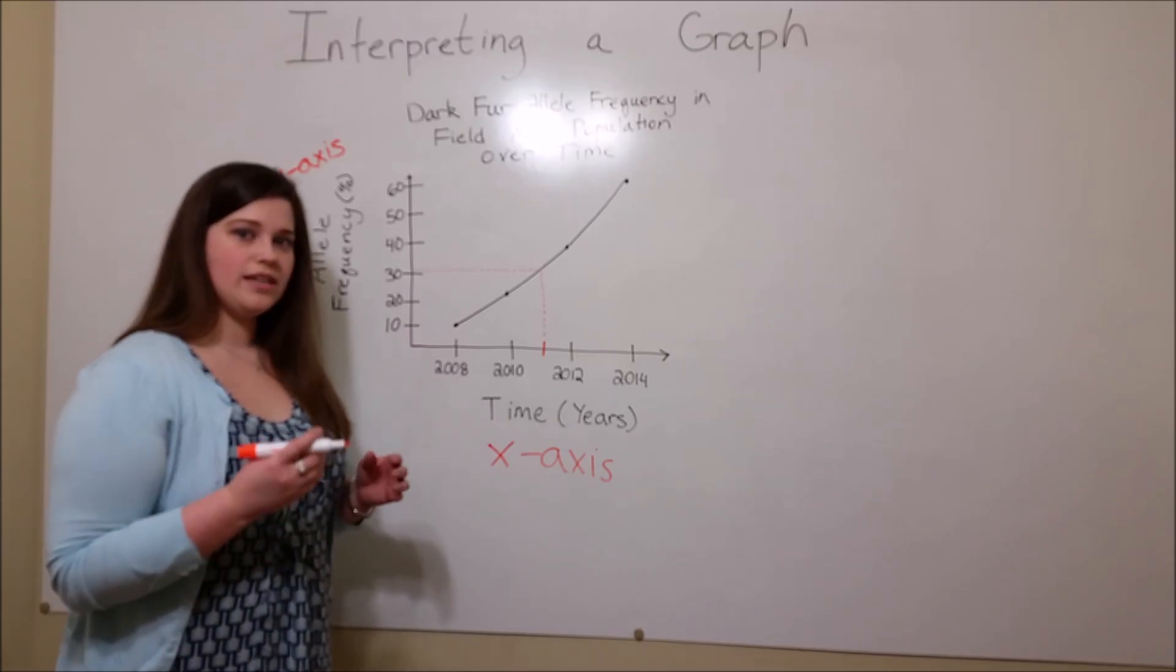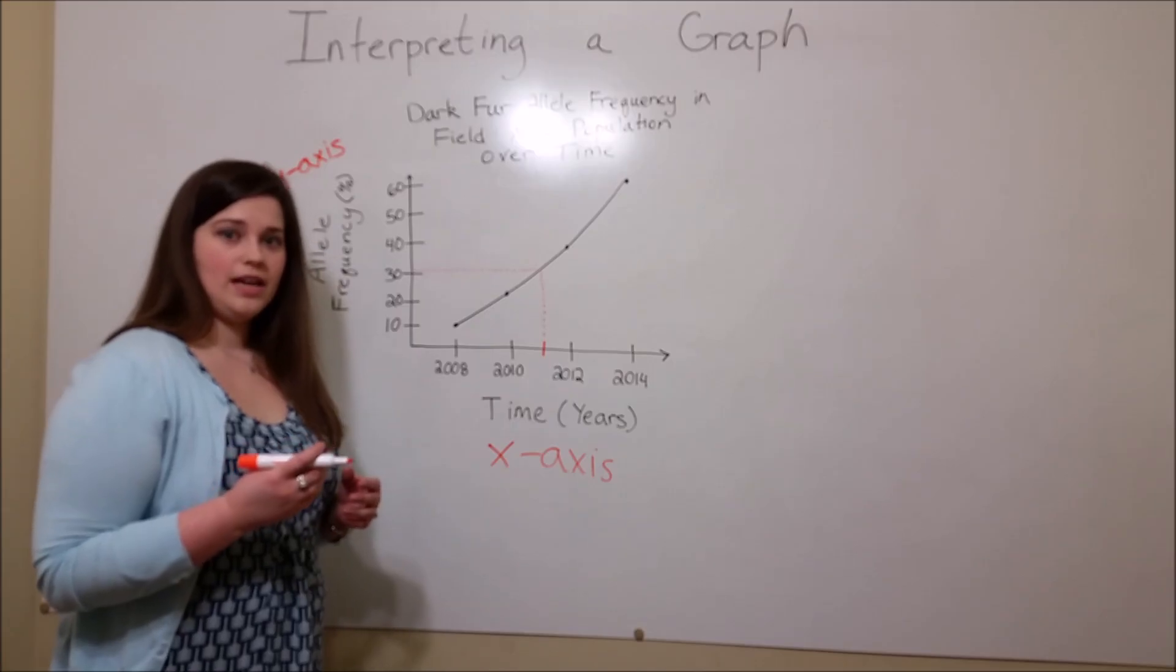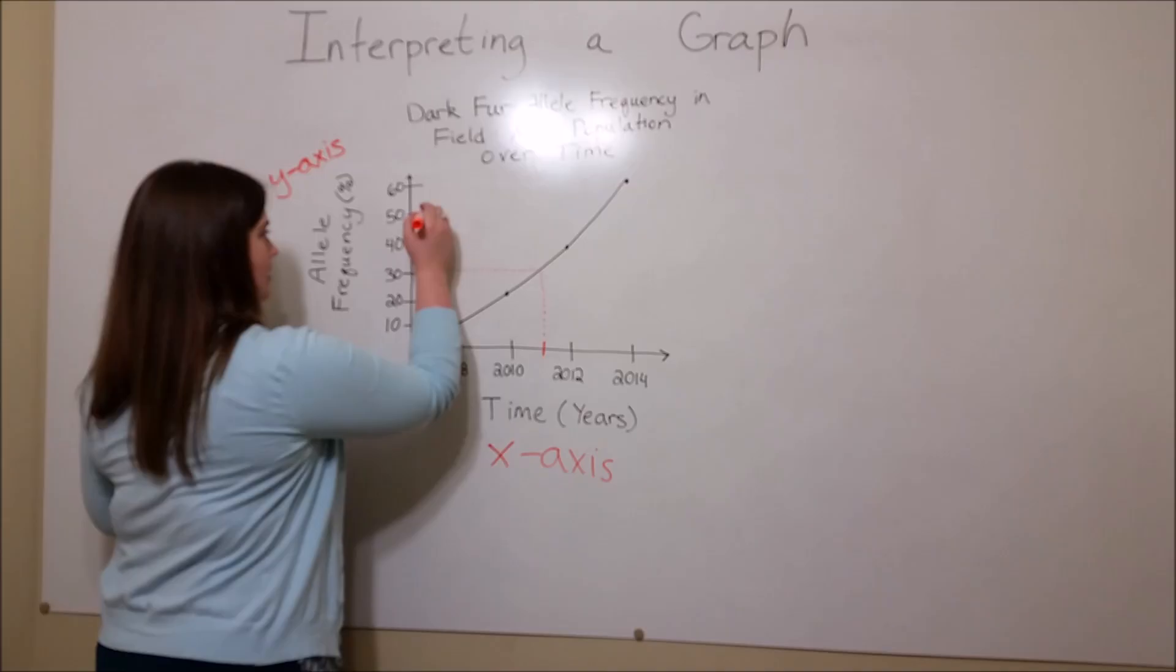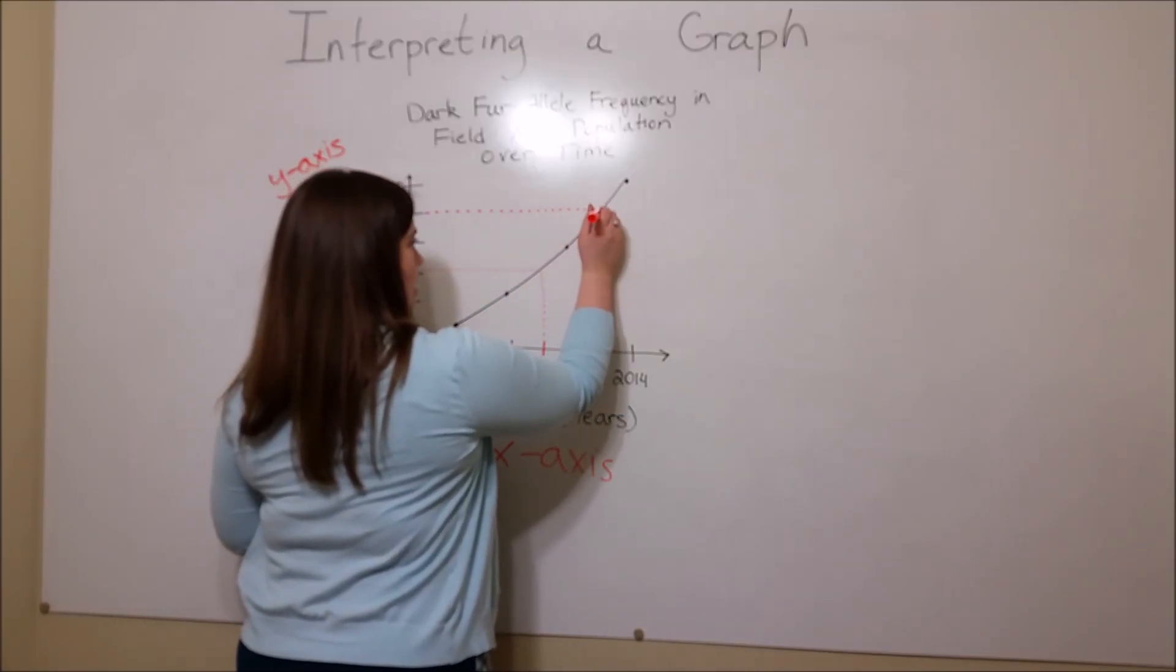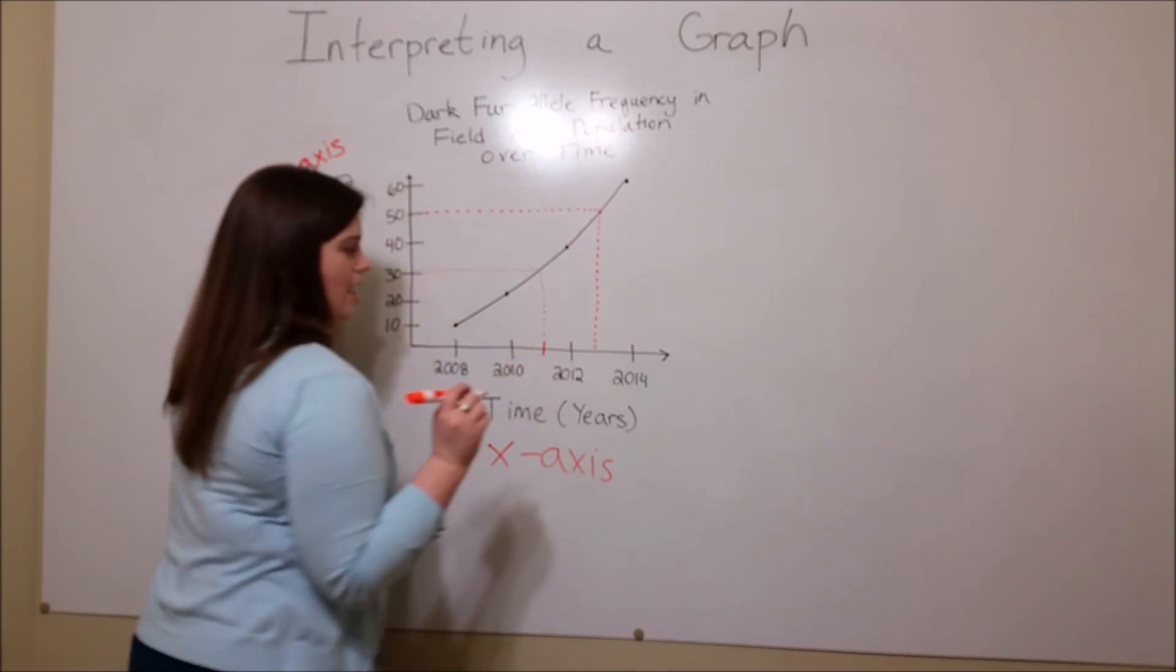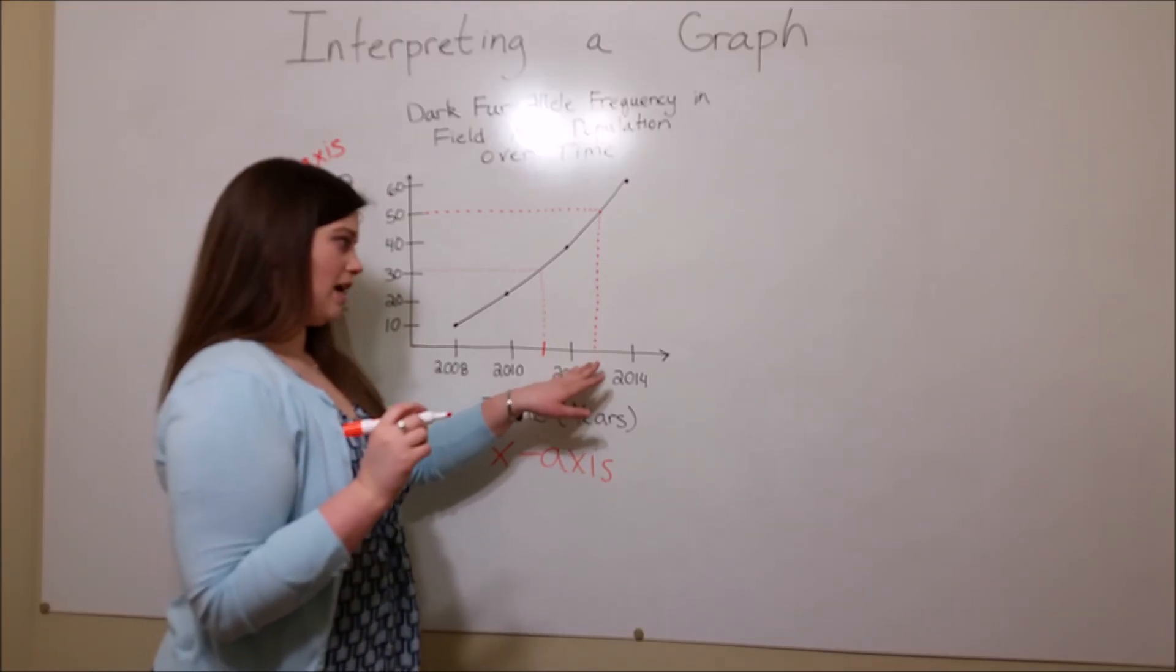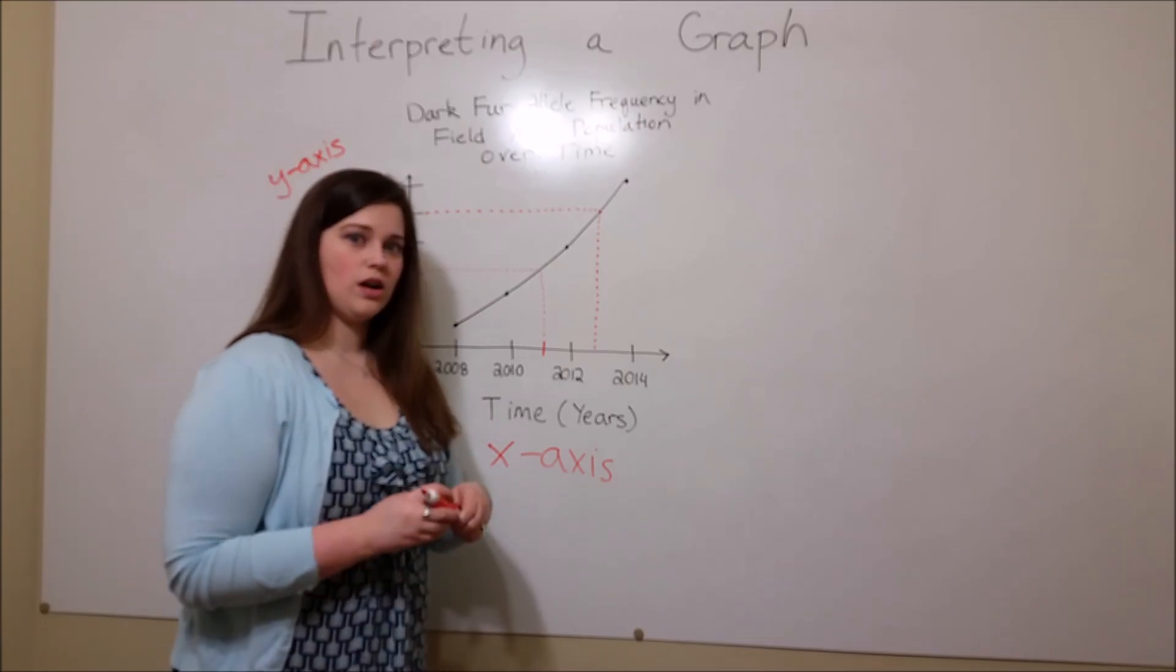That is, if you were asked, in what year did the dark fur allele make up 50% of the population? You go to the 50% on the y-axis, draw across, and then down to the x-axis. And you would see that it is approximately 2013, sometime during 2013, when the 50% mark was reached.